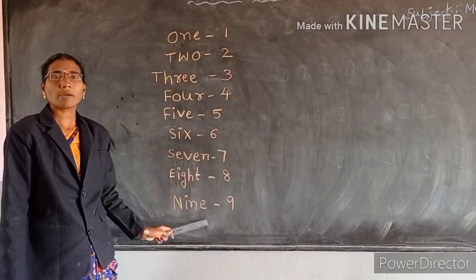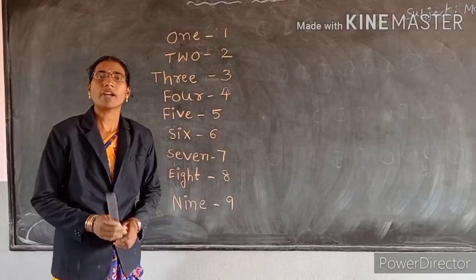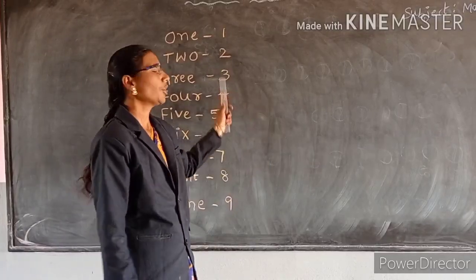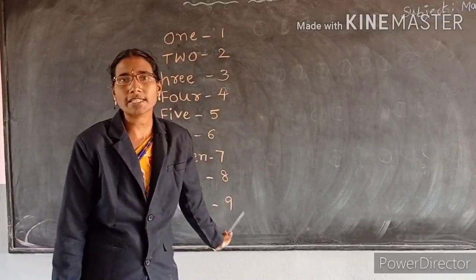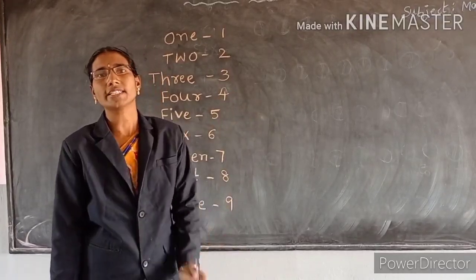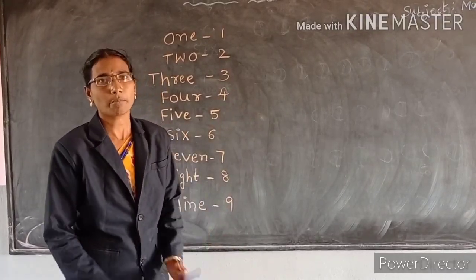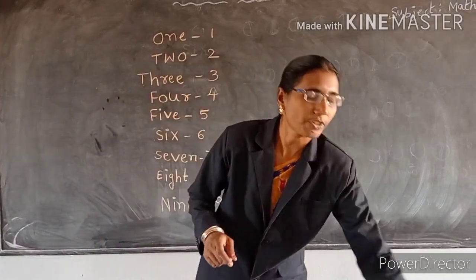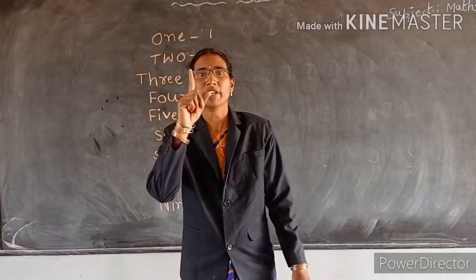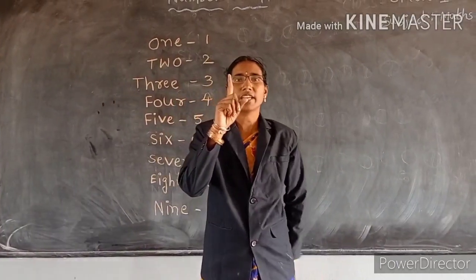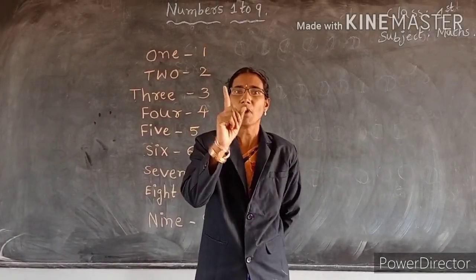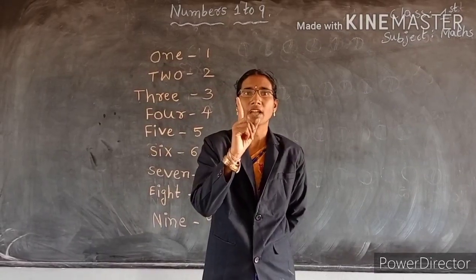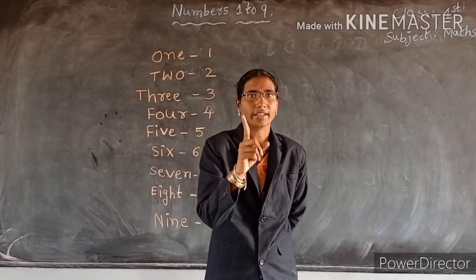One to nine numbers. One digit numbers. One to nine numbers. One digit numbers. Okay, children, see all of you. How many fingers are there? One. O, N, E. One.